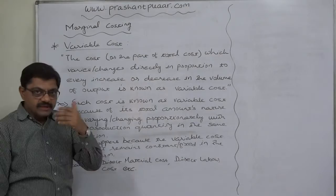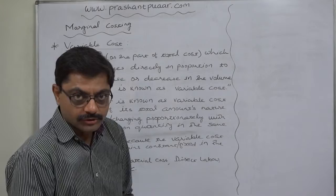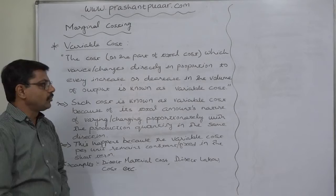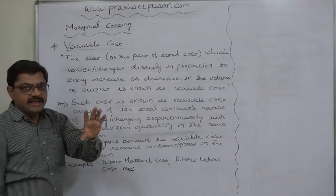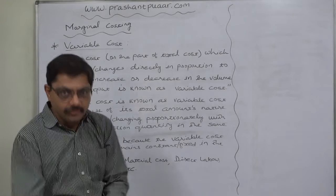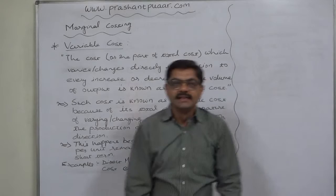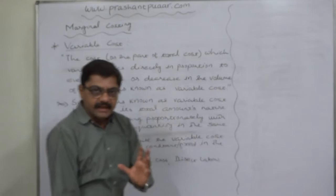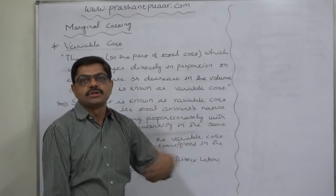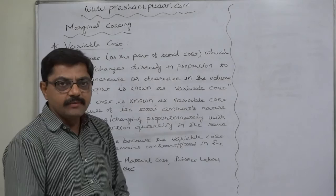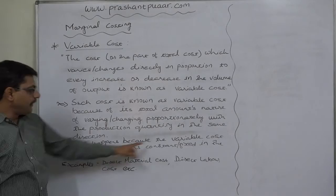Now what is the reason behind this type of behavior? Such cost is known as variable cost because of its total amount's nature. The name variable cost refers to the aggregate amount of that part of total cost — not the average per unit amount. Such cost is known as variable cost because of its total amount's nature of varying or changing proportionately with the production quantity in the same direction.